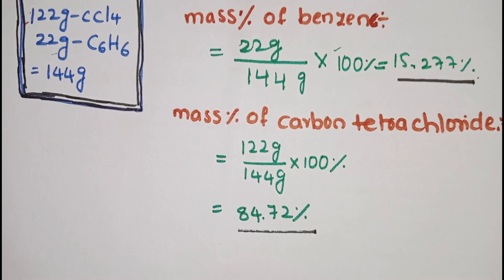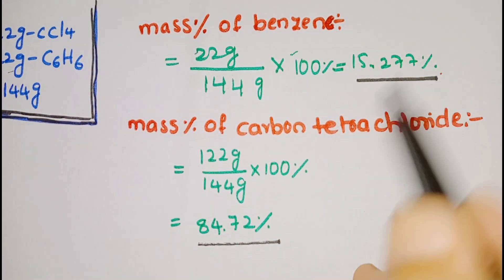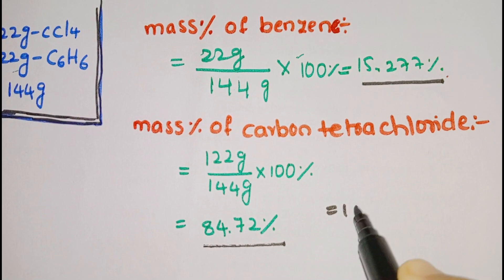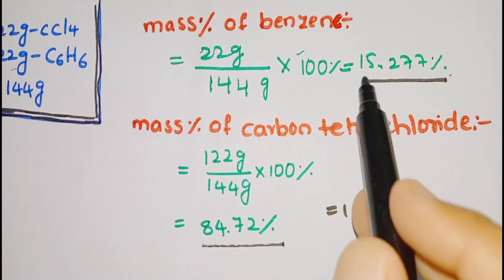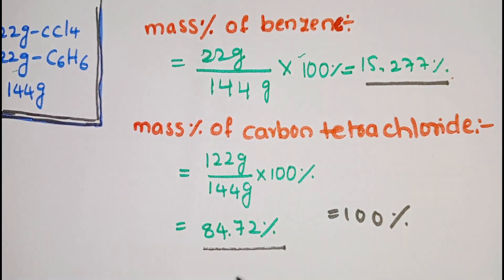If we add both mass percentages, we will get 100% because by assuming it is 100%, we are calculating mass percentage of each component in the solution.